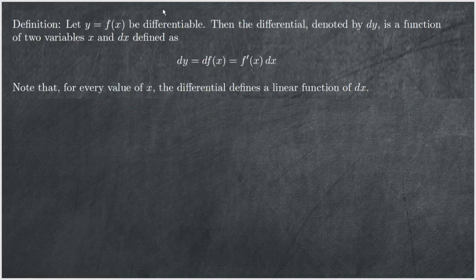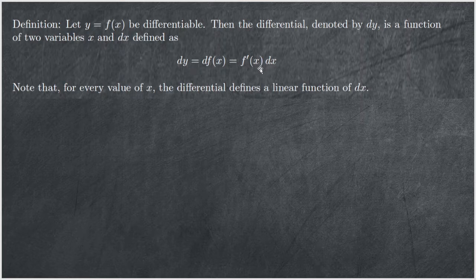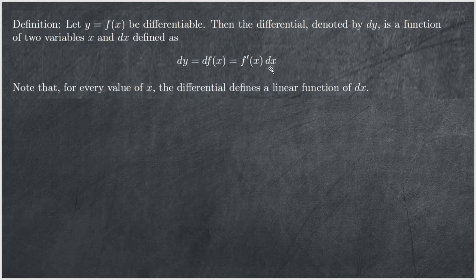The definition of differentials is on the screen. In the definition, we treat the differential dy as a function of two variables, x and dx. So dy is the dependent variable, and x and dx are independent variables. This means that each pair of values of x and dx determines a unique value of dy. Assuming the function is differentiable, to find the differential of the function, all we need is to differentiate the function and then multiply the derivative by dx. Note that for every value of x, the differential defines a linear function of dx.